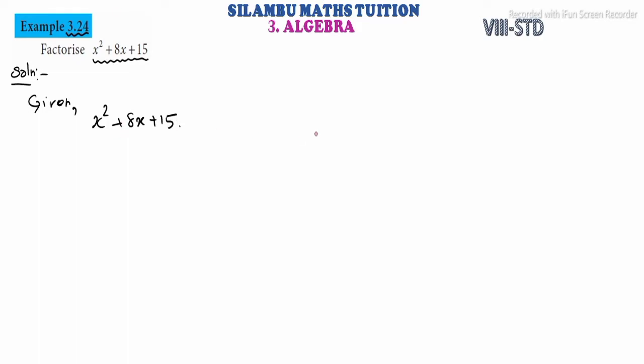In the value, we have ax square plus bx plus c in the format to compare. Now we compare this. We have a is equal to 1, b is equal to 8, c is equal to 15.